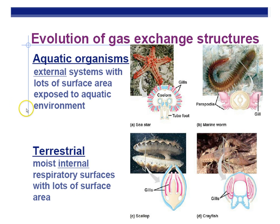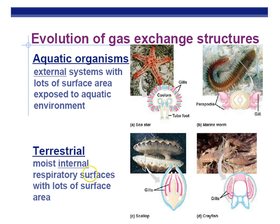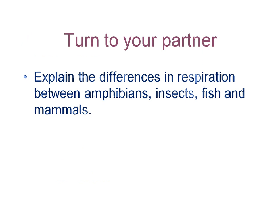Aquatic organisms have external respiratory surfaces exposed to the environment — if fish gills dry out they can't exchange gases, but since they live in water, that's not a problem. There's no selective pressure for internal respiratory surfaces in aquatic animals. Terrestrial animals are different: we have internal gas exchange surfaces to prevent drying out. That's why your lungs are inside while fish gills are outside. Let's pause and explain the differences in respiration between amphibians, insects, fish, and mammals.